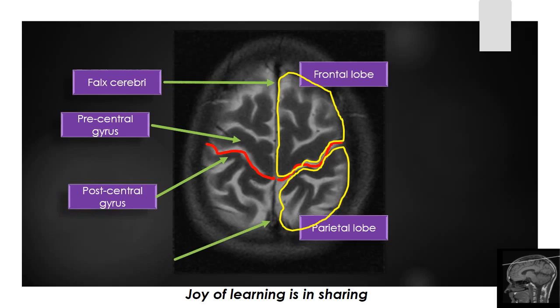The fluid situated in the posterior median region of the falx cerebri is formed by the superior sagittal sinus.